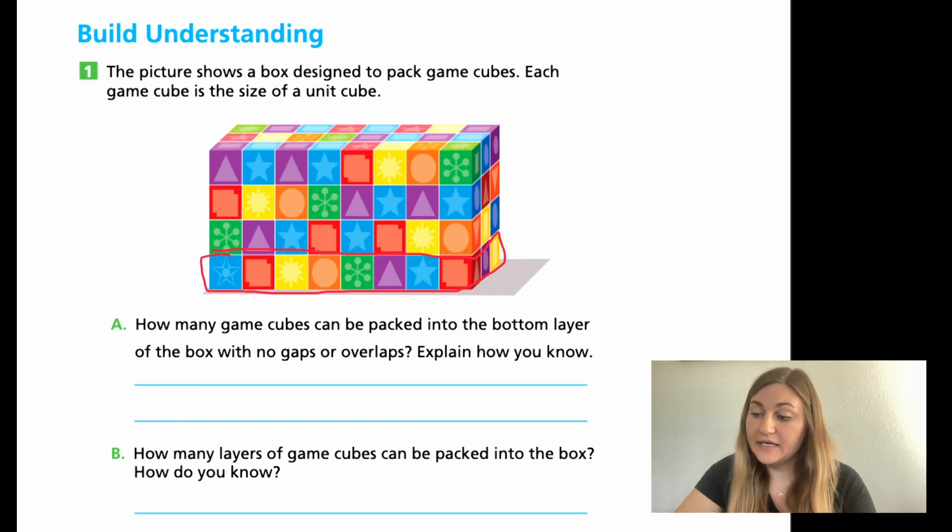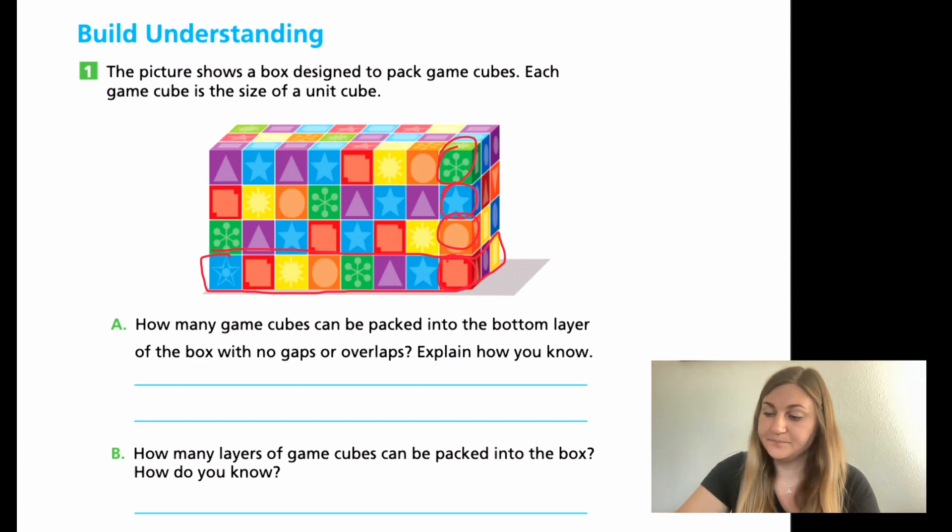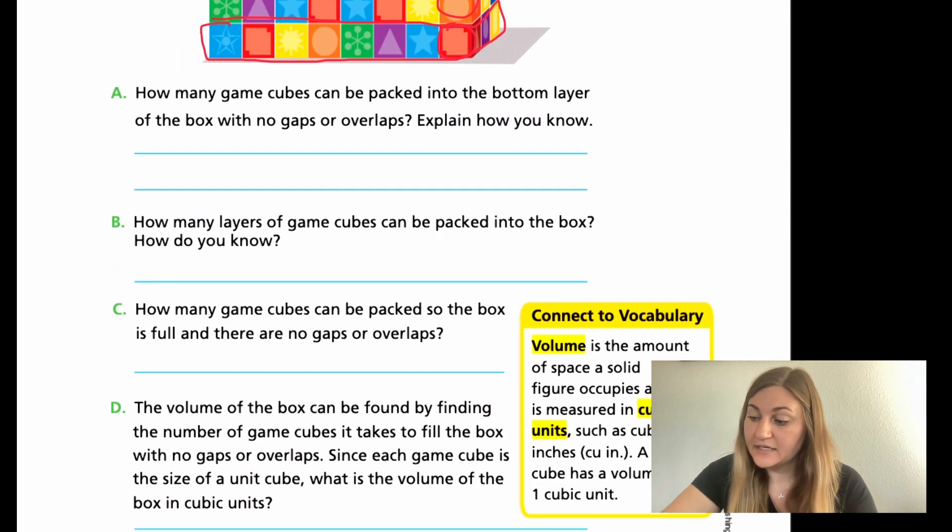For B, how many layers of game cubes can be packed into the box. So layers would be like the height: one layer, two layers, three layers, and four layers. For C, how many game cubes can be packed so the box is full and there are no gaps or overlaps. And D, the volume of the box can be found by finding the number of game cubes it takes to fill the box with no gaps or overlaps. Since each game cube is the size of a unit cube, what is the volume of the box in cubic units? So C and D are going to be the same answer, but you're going to write them in slightly different ways. Go ahead and try all of number one and I'm going to have you hit pause right here.